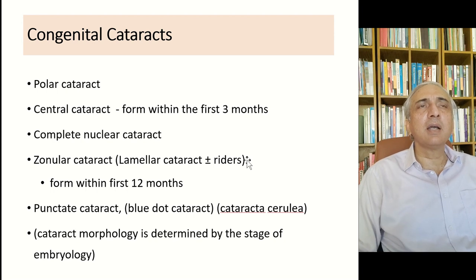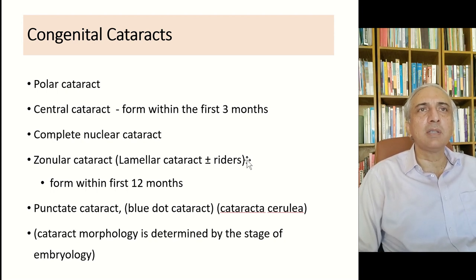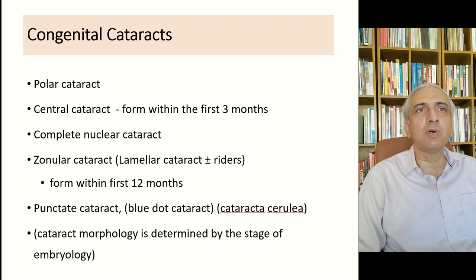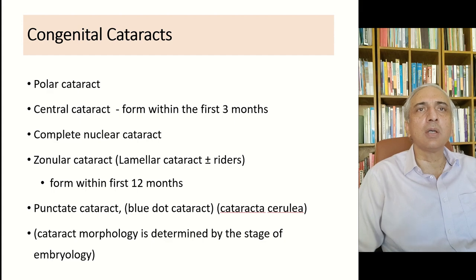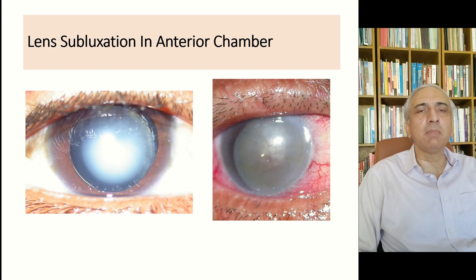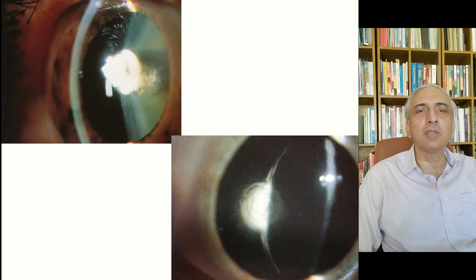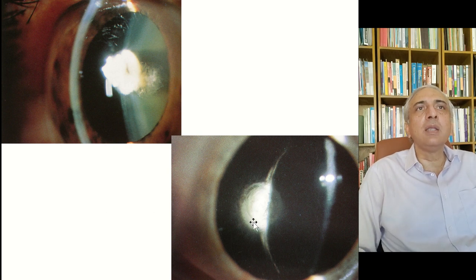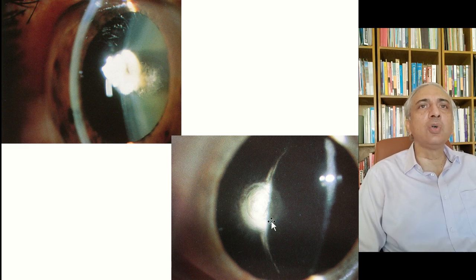Congenital cataracts include polar cataract and central cataract forming within the first three months, complete nuclear cataract, zonular cataract with riders forming within the first 12 months, and punctate cataracts or blue dot cataracts, also called cataracta cerulea. The morphology of cataract is determined by the embryological stage at which stress occurred.